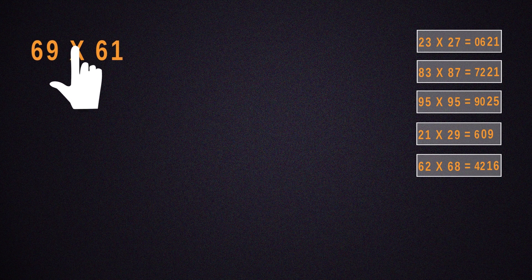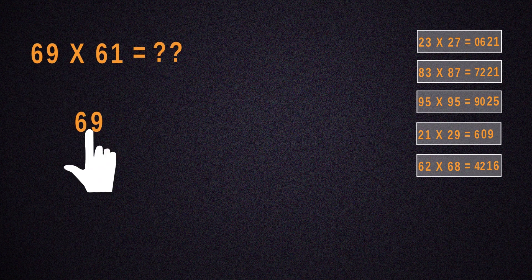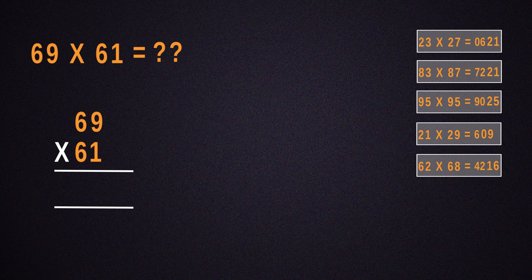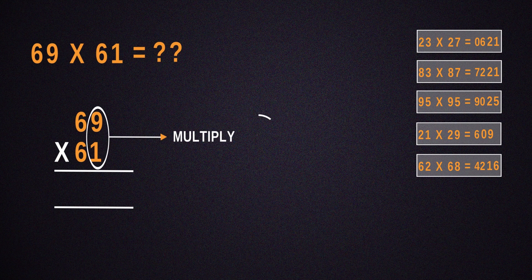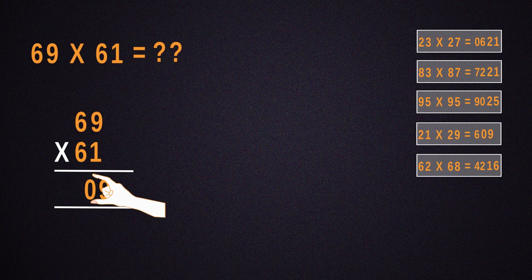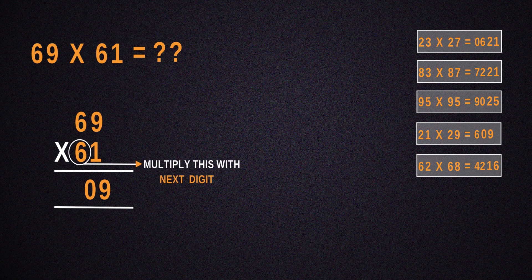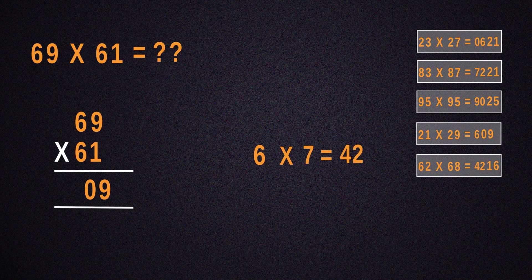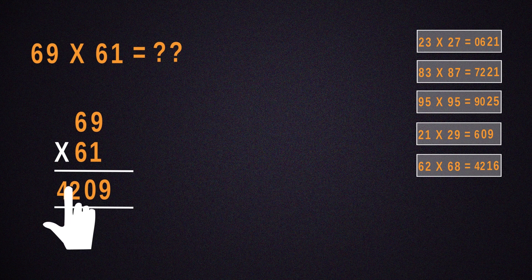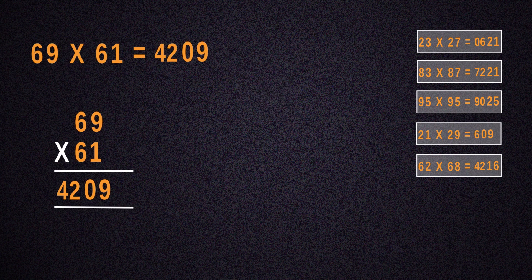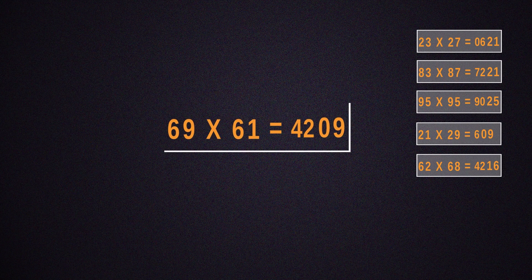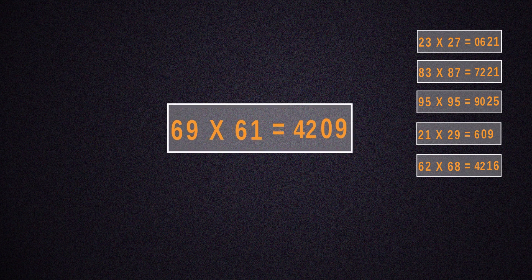Now, multiply 69 by 61. For that, the number obtained by multiplying 1 by 9 will be 09 and that should be put down. Then, multiply 6 with its next number, which is 7. Place the result next to 09 and we get 4,209 as the answer.